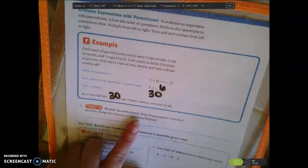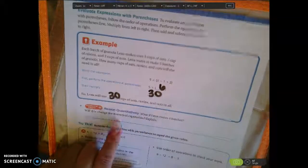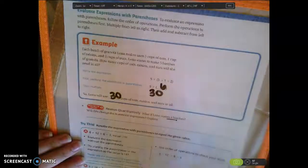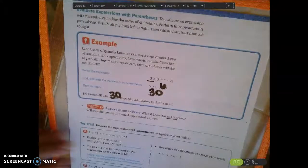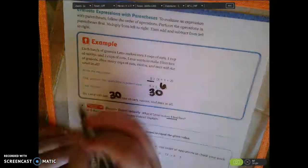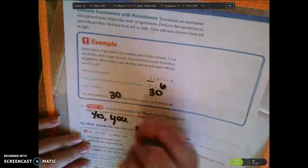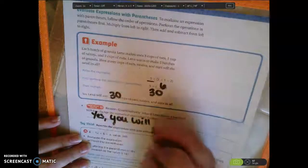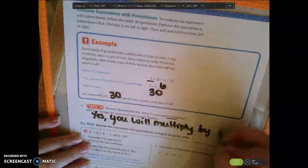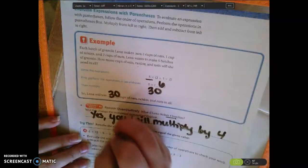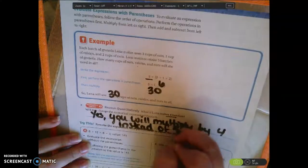Here we want to answer this question. What if Lena makes 4 batches? Will this change the numerical expression? Explain. If she's making 4 batches instead of the 5 batches, it is going to change the numerical expression. Because instead of multiplying by 5, you're going to multiply by 4. Yes, you will multiply by 4 instead of 5.